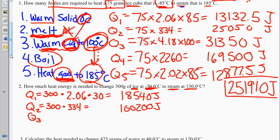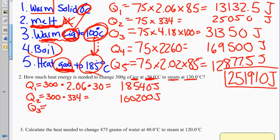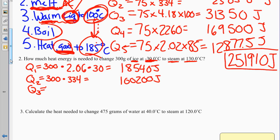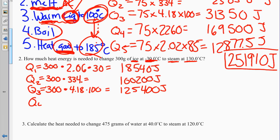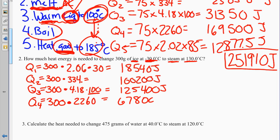Q3: warm liquid from 0 to 100 degrees. Q equals MC delta T: 300 times 4.18 times 100 equals 125,400 joules. Q4: boil at 100 degrees — phase change, no temperature change. Q equals M delta H: 300 times 2,260 equals 678,000 joules.